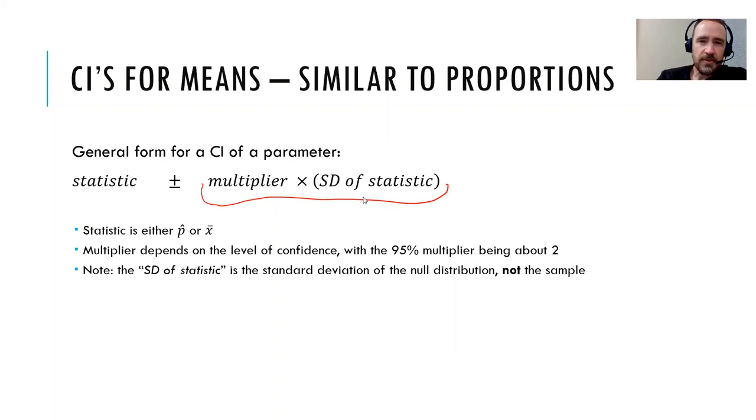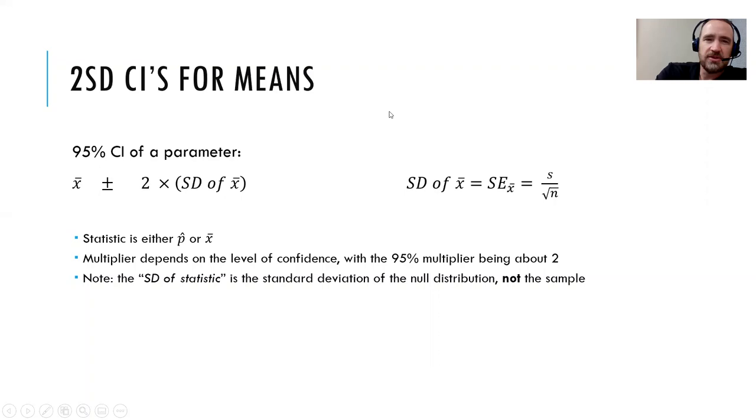Our statistic is either p hat or x bar, we can use either one, and the multiplier depends on the level of confidence. With a 95% confidence interval, the most common one, having the multiplier of being right around 2. Take note that the standard deviation of the null distribution and not of the sample. So that's one thing we're going to run into here when we talk about means. We are going to have a standard deviation of our sample. That's a different number than the standard deviation of the statistic or the standard deviation of the null distribution.